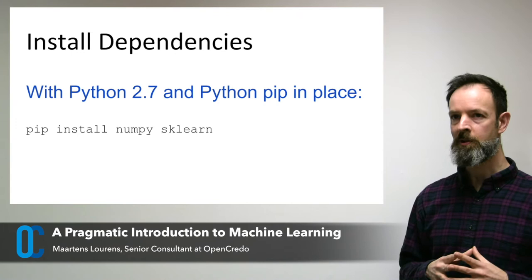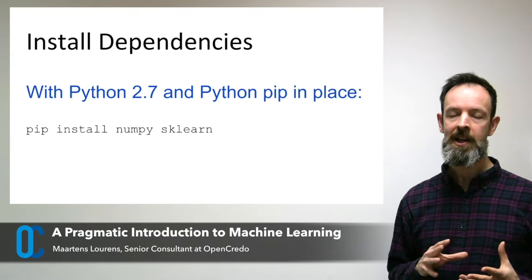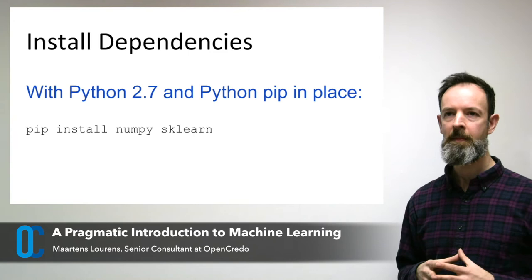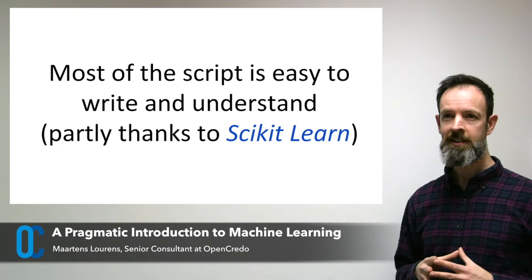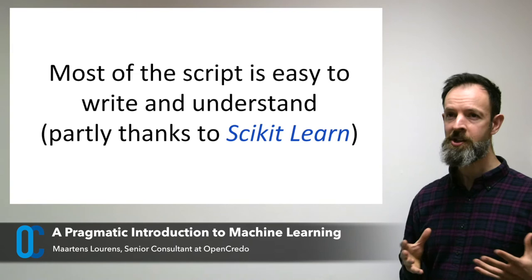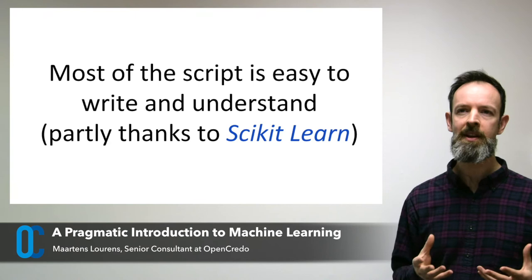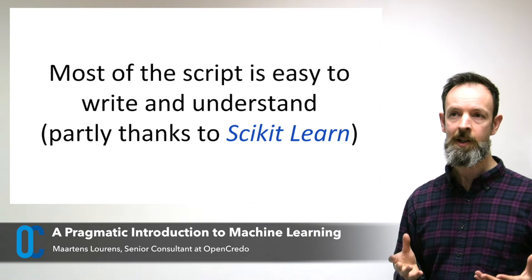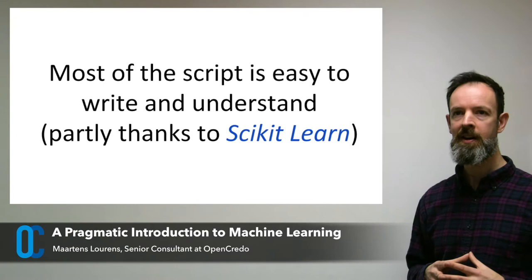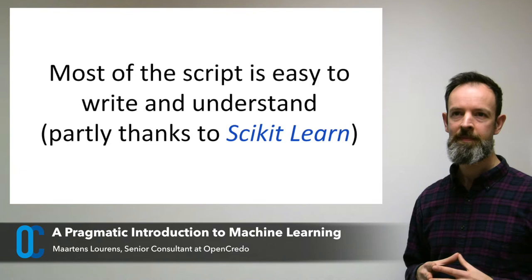Next, you'll want to make sure you have a recent version of Python 2.7 installed, and you will also need Python pip. With those in place, we can simply do 'pip install numpy' and 'sklearn.' This will install the scikit-learn and NumPy Python libraries that we are going to use. While writing the script, we will see that more than half of the script is bread-and-butter for any developer or DevOps engineer. Only a small core part of the script deals with the actual machine learning process, and in many cases this core pattern is very similar among scripts solving very different machine learning problems. If you understand this script, chances are you will be able to identify key parts of many other supervised machine learning scripts as well.